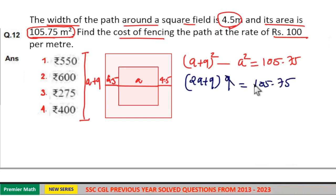Here 9 goes 1 time in 10, 9 goes 1 time in 15 remaining 67, 9 goes 7 times in 63 remaining 45, 9 goes 5 times in 45. So 11.75 is equal to 2a plus 9, means 2a is equal to 11.75 minus 9, that is 2.75.